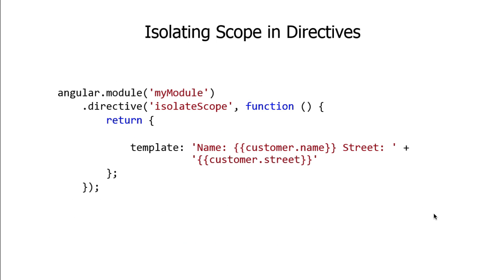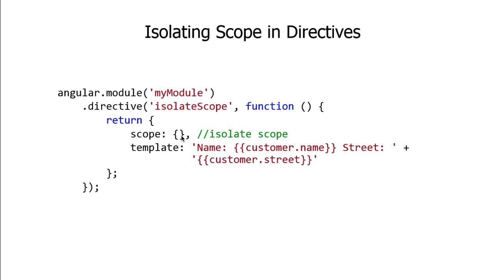When it comes to isolating scope, it's a simple technique using a property from the DDO — directive definition object. In our isolate scope directive, we have a template with customer name and street data binding expressions. To isolate the scope, we use the scope property in the DDO and set it to curly braces. Those curly braces represent each side of the wall. We can then build machinery into the wall so the parent scope can still communicate down into the directive.